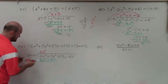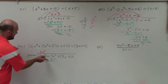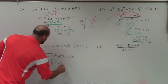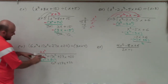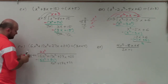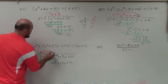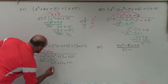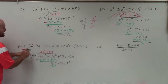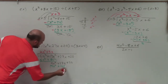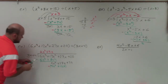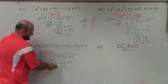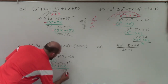Subtract the rows — always use parentheses, because this is where a lot of students make mistakes. 6x cubed minus 6x cubed gives 0. 17x squared minus 8x squared gives 9x squared. Bring down the rest of the problem. Now 3x divides into 9x squared: 9 divided by 3 is positive 3, x divides into x squared x times, giving 3x. Multiply 3x by both terms: 3x times 3x is 9x squared, and 3x times 4 is positive 12x. Put in parentheses and subtract: 9x squared minus 9x squared is 0. 27x minus 12x gives 15x. Bring down the 20.